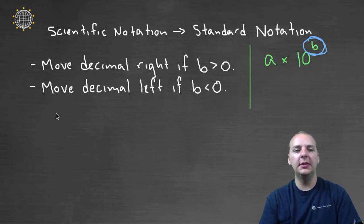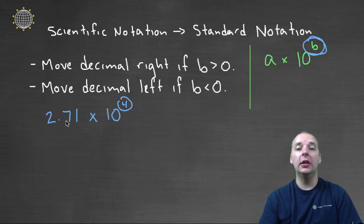So a simple example, let's say we had 2.71 times 10 to the fourth. Well since this is 10 times 10 times 10 times 10, four factors of 10, this number is going to get larger, and we're going to move this decimal place right four units since the b was greater than zero.